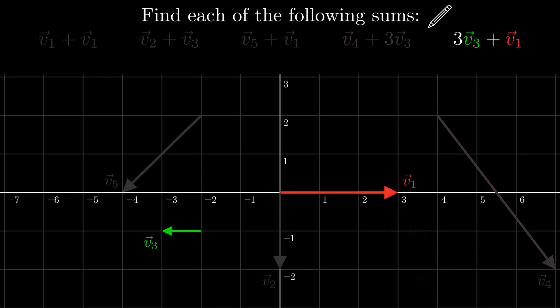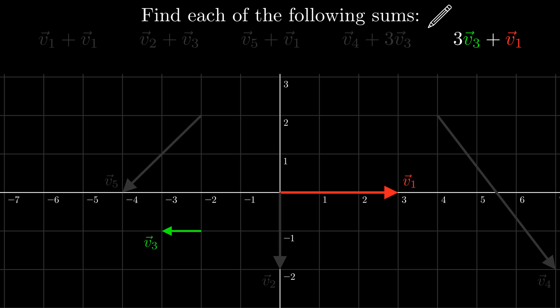The last one, 3v3 plus v1, seems similar. We need to first scale v3 by 3, then move v1 to the end of that result. Then the sum — what is the sum? It starts at the beginning of 3v3 and ends at the end of v1. The beginning and end of the sum are at the same point, so its length is 0. We learned in the last video that there is only one vector with a length of 0: the zero vector. Thus, the sum is the zero vector.